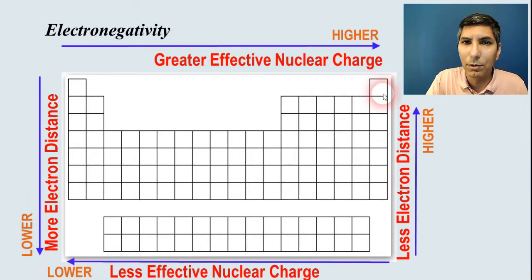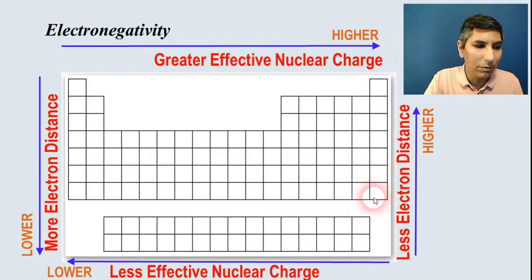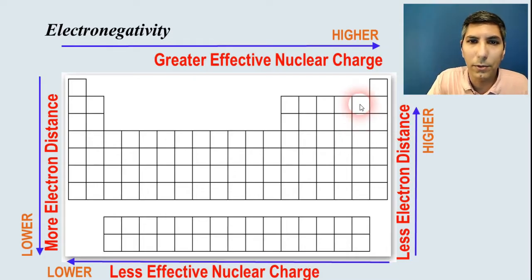Just as a side note, normally, we don't talk about the electronegativity of the noble gases. Technically, they do have an electronegativity, but we don't worry about those. We kind of just focus on the others. Fluorine, just so you know, has the highest electronegativity of all the elements.